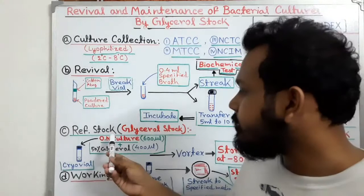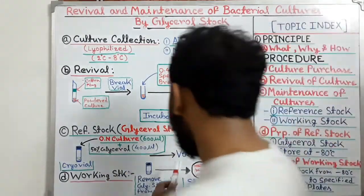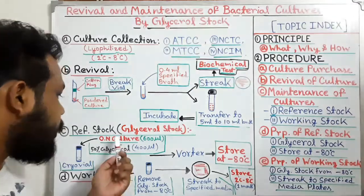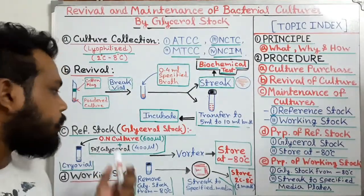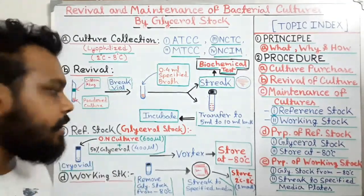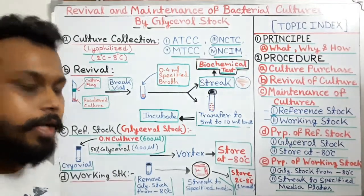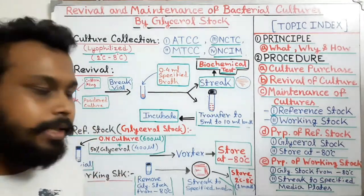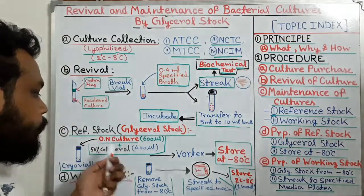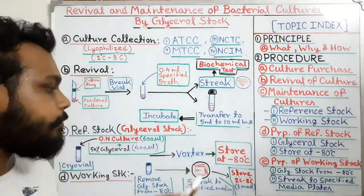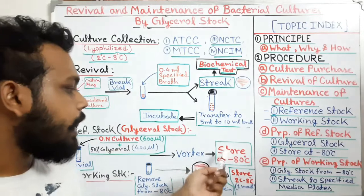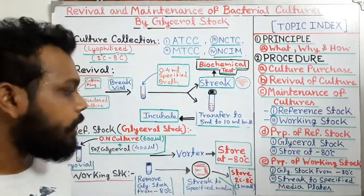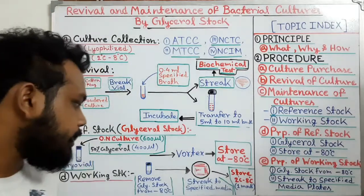After adding the culture and glycerol, we must vortex them or mix them thoroughly. This is a very vital process because if the culture is not properly mixed with glycerol, ice crystals can form and rupture the cell membrane. Glycerol binds with the cells to prevent or reduce this cell lysis. After vortexing, we store the glycerol stocks at minus 80°C in an ultra-low temperature freezer.